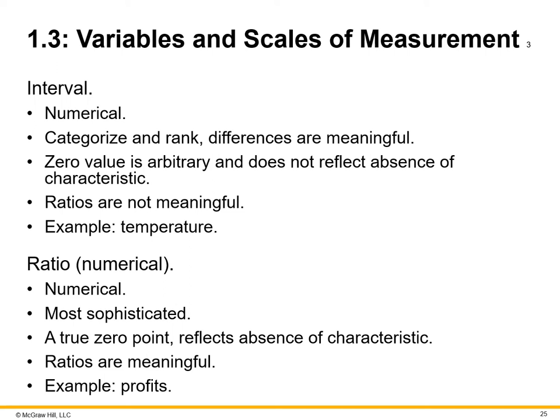Interval is a numerical measurement where values are categorized in rank and differences are meaningful. Zero value is arbitrary and does not reflect the absence of a characteristic, and ratios are not meaningful — examples include intervals of temperature, time, or inflation pricing. Ratio is numerical and most sophisticated — it has a true zero point reflecting the absence of a characteristic, and ratios are meaningful. Examples include profits or three-to-one ratios. Ratios are very important because they allow us to build strategies around a multiplier effect based on ratio-driven insights.